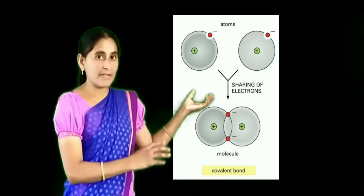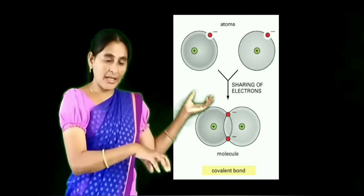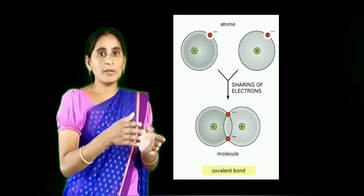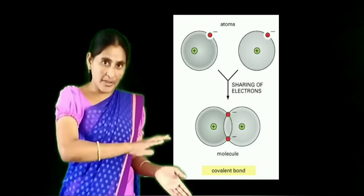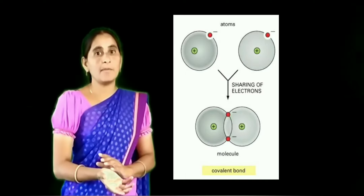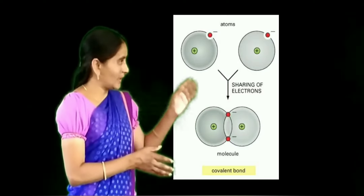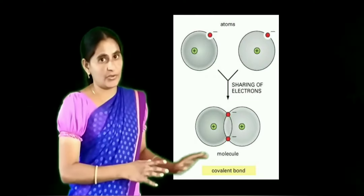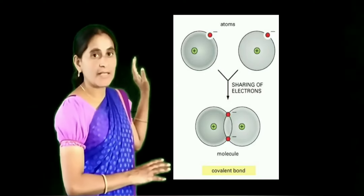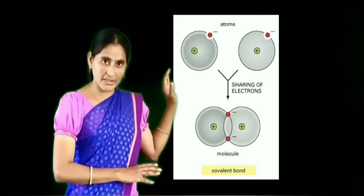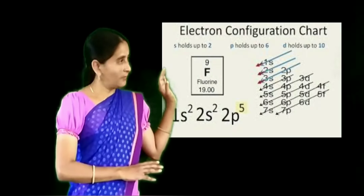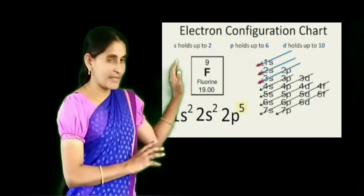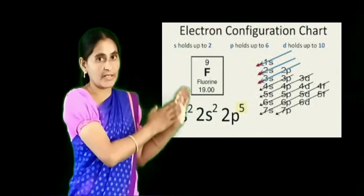Such a kind of bond forming between similar elements is called covalent bond. Co- means similar, valent means needed or necessity. Similar necessity elements will involve in covalent bond, which forms by mutual exchange of the electrons. We can find one example with fluorine. Fluorine has atomic number 9, and its electronic configuration is 1s2, 2s2, 2p5.